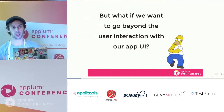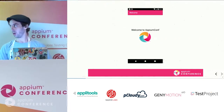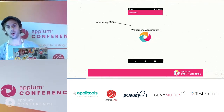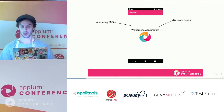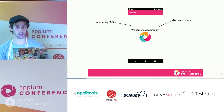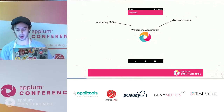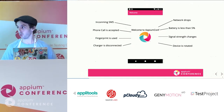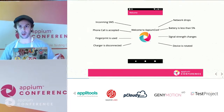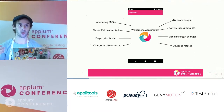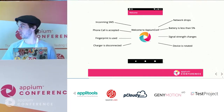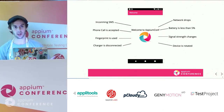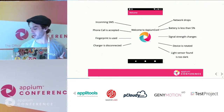But what happens if you want to go beyond user interaction on your app? What other factors can affect your application? What happens if you're getting an incoming SMS? The network suddenly drops — that's really common. You go into a tunnel, you use an app, and something starts happening. A phone call is accepted — is your app ready for this? The battery is really low. The fingerprint is used. The signal strength changes. The charger is disconnected. The device is rotated. The light sensor detects it's too dark. And much more.